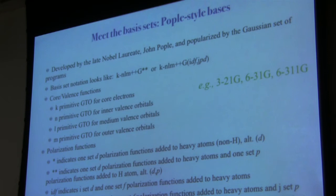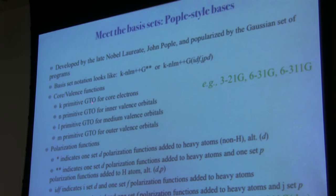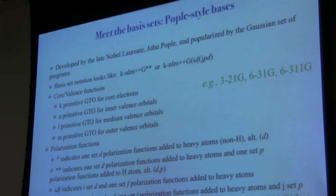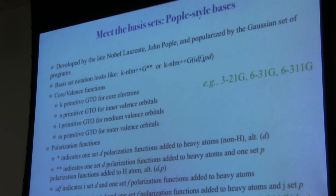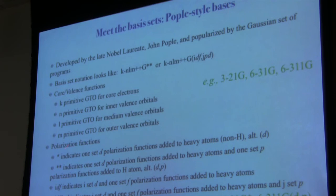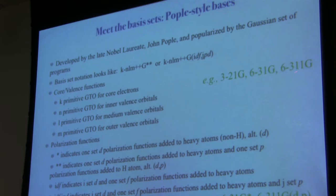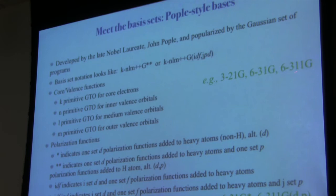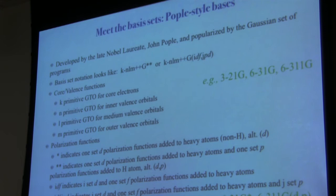Basis sets in this style look like 3-21G or 6-311G. The first number is how many primitive GTOs are used for core functions — the difference between 3-21G and 6-31G is how well core orbitals are described. N is the number of primitive GTOs for inner valence, L for medium valence, M for outer valence. Practically, you'll see 3-1 (as in 6-31G, approximately split-valence double-zeta quality) or 3-1-1 (as in 6-311G, approximate triple-zeta quality, though rather small for a triple-zeta).